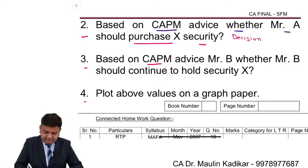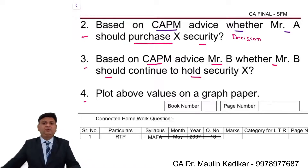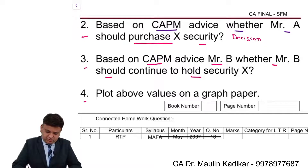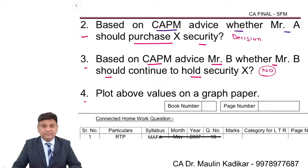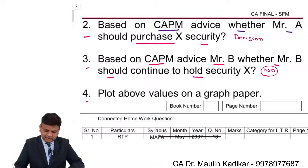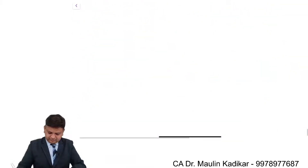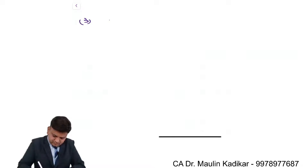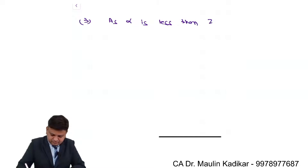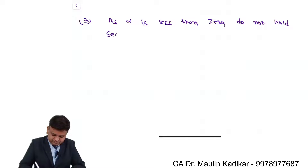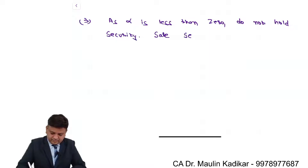Third question: based on CAPM, advise Mr. B whether he should continue to hold security X. The answer is again no, because alpha is negative. Since alpha is less than zero, do not hold the security — sell the security.